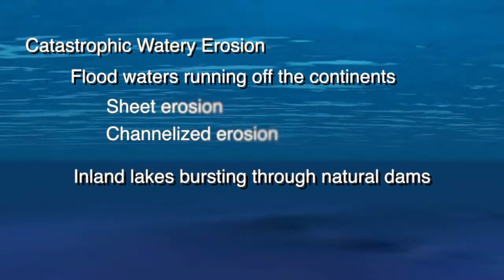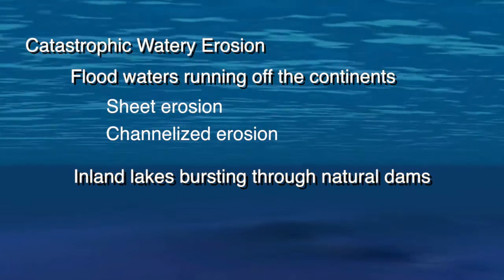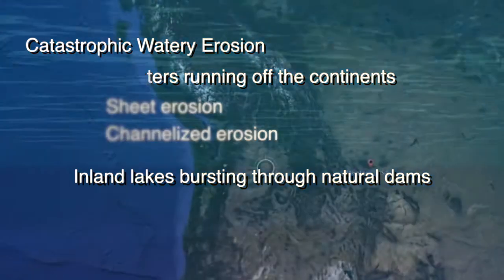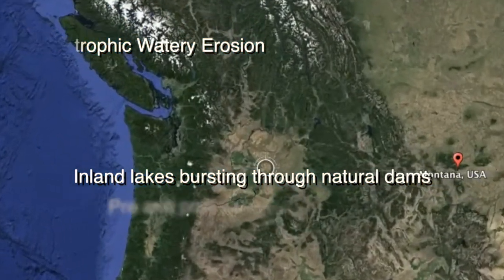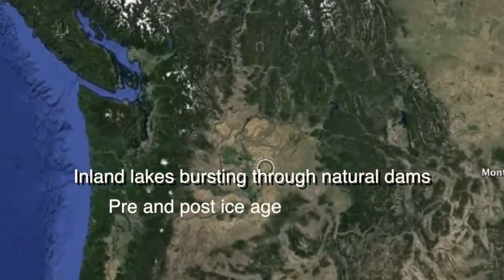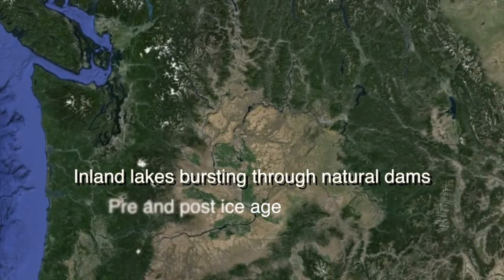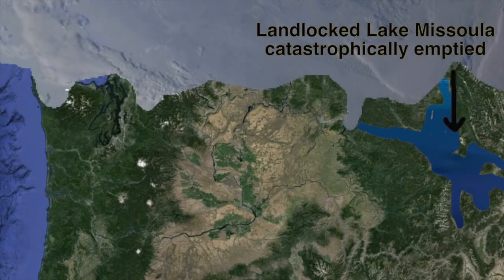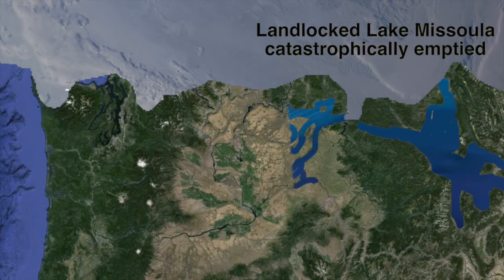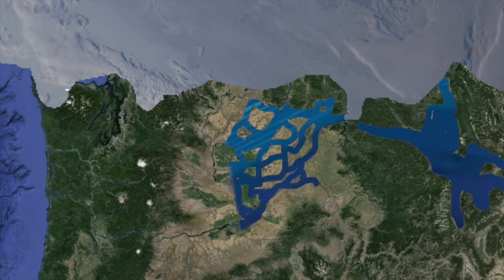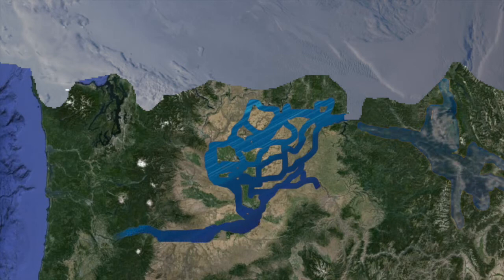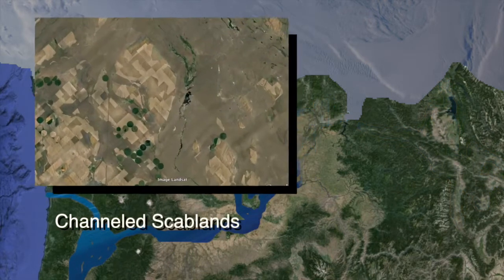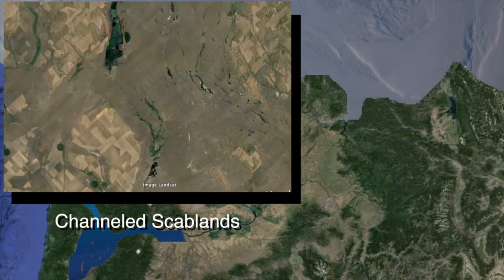The second type is related to large inland lakes which suddenly burst through mountain ranges that were holding them in. Some of these lakes formed as a result of melting ice, which followed the Ice Age, which was a consequence of the global flood. For example, the channeled scablands in the US formed when glacial Lake Missoula was catastrophically emptied due to the melting of ice which had kept it in.